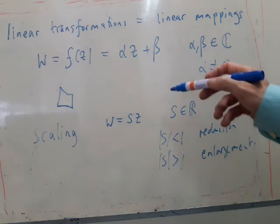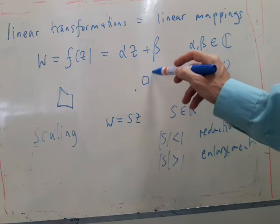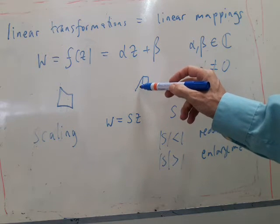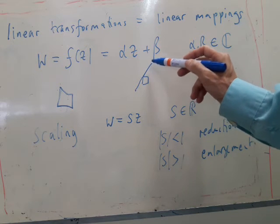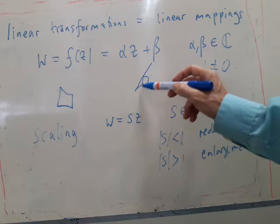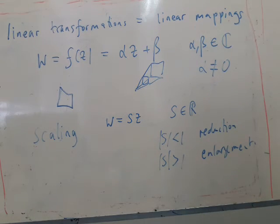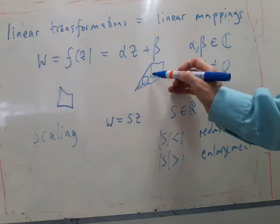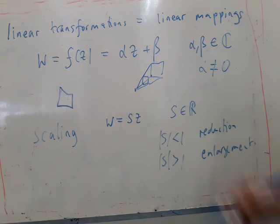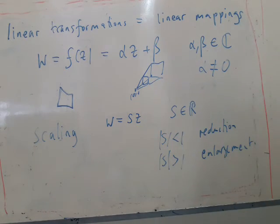The center of enlargement, if you know about such things, so basically if you've got some shape here, it's fairly obvious, if for example s was two, then this distance here is going to increase by a factor of two. This distance here is going to increase by a factor of two, and so on. You end up with a shape which is twice the size. And the center of enlargement is the origin in the complex plane for such an enlargement.